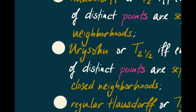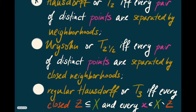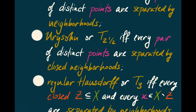Now let's use these phrases to define all the various kinds of separation axioms. Our topological space will always be T1 as a background condition. First, X is Hausdorff, or T2, if and only if every pair of distinct points is separated by neighborhoods — the definition we saw a few lectures ago. We can improve on it: X is Urysohn, or T2½, if and only if every pair of distinct points are separated by closed neighborhoods.